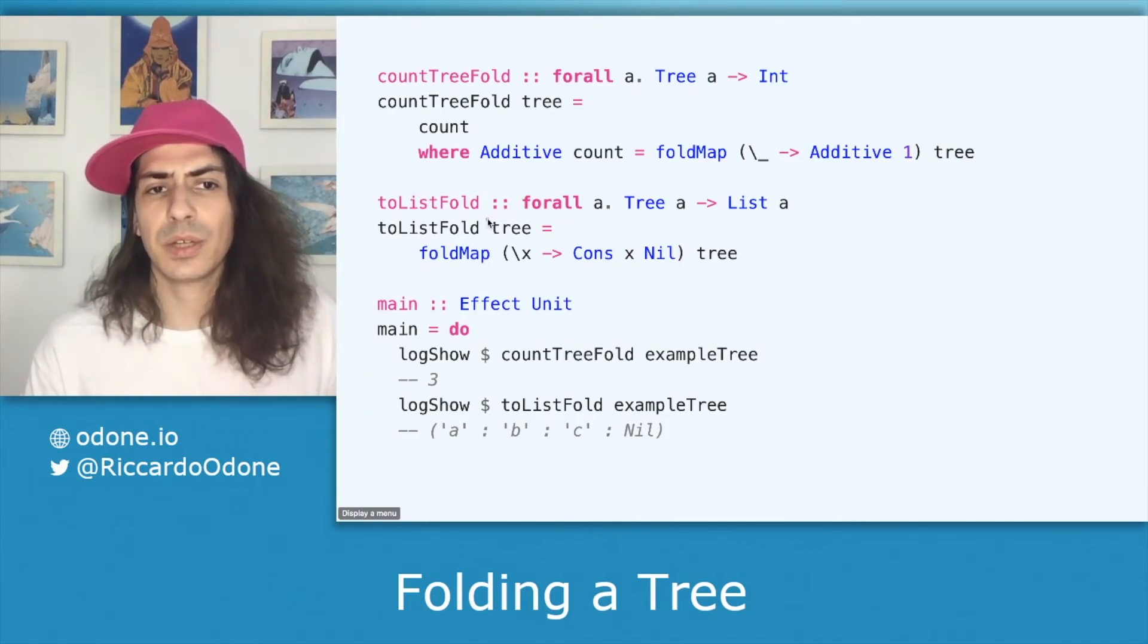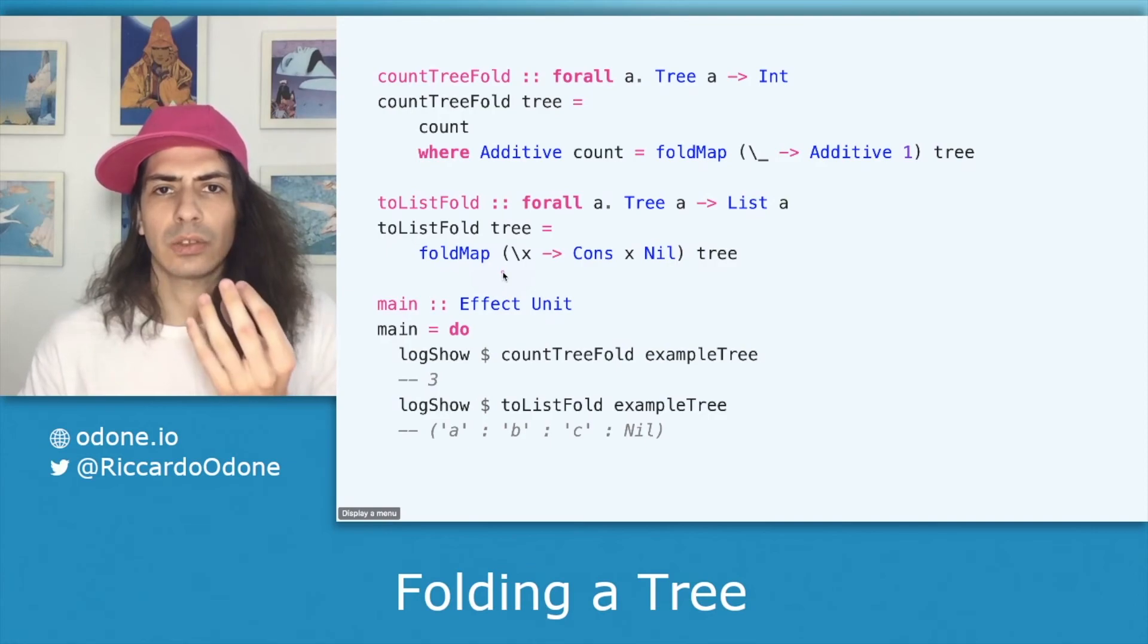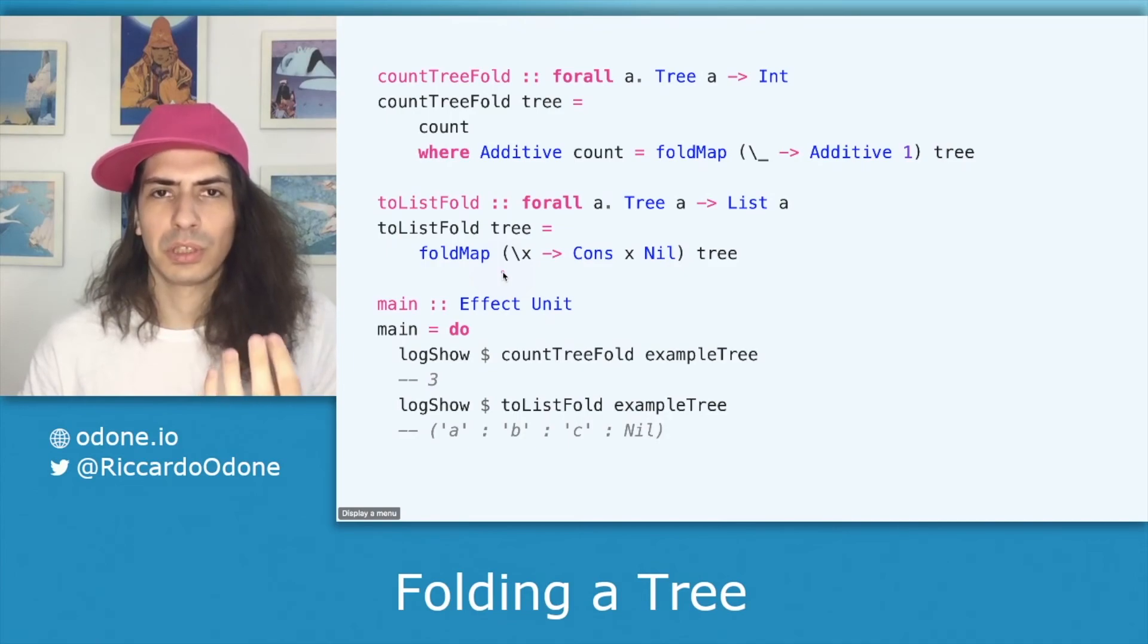Now in the case of transforming everything into a list we call foldMap we give it our tree and the way we transform every value into something that can be squashed together to give us the list of characters that we need at the end we just transform every leaf into a list that contains only that character.